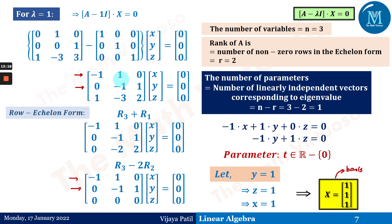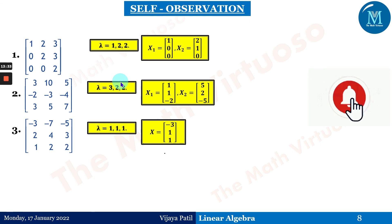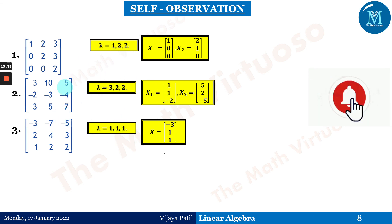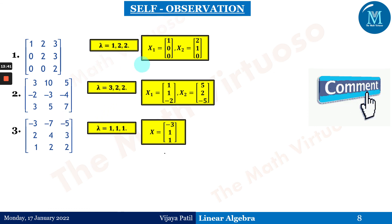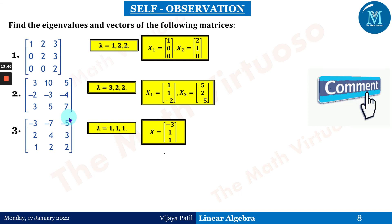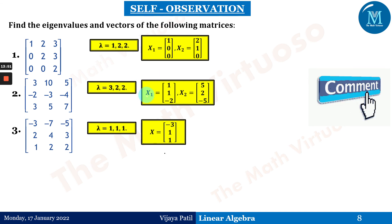As a caution: for small matrices we can visually check whether equations are the same and choose accordingly. But for larger matrices, we must always use the row echelon form. A self-observation slide has been provided with three matrices; you should find the eigenvalues and eigenvectors corresponding to each.